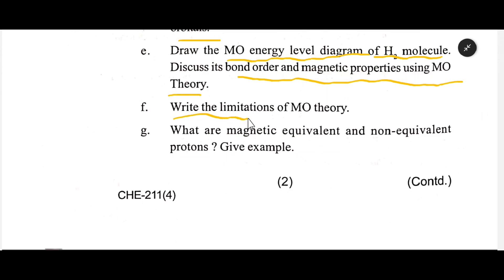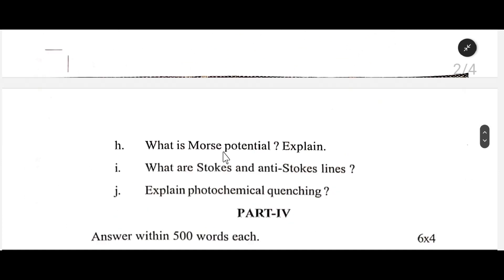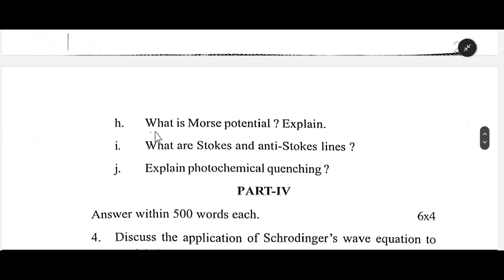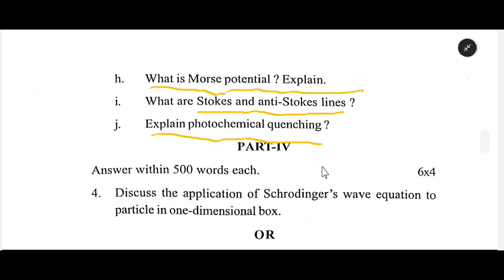Write the limitations of MO theory. What are magnetically equivalent and non-equivalent protons? Explain with examples. What is Morse potential? Explain. What are Stokes and anti-Stokes lines? Explain photochemical quenching.